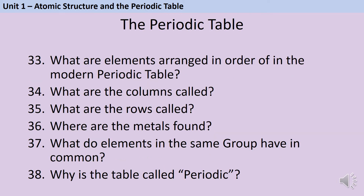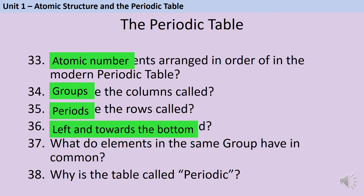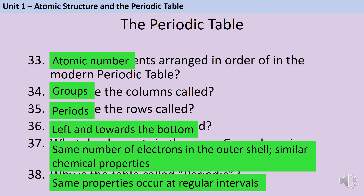In the modern periodic table, elements are arranged in order of their atomic number — that is, how many protons they have. The columns of the periodic table are called groups and the rows are called periods. The metals are found towards the left and the bottom of the periodic table. Elements in the same group have the same number of electrons in their outer shell, which leads them to have the same chemical properties. The table is called periodic because the same chemical properties come back at regular intervals throughout the table.